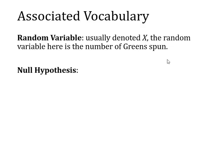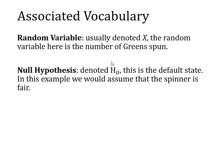Another bit of vocabulary is what we call the null hypothesis. The null hypothesis is always denoted H₀, and it is always the default state — it's what we would assume the case to be without any change. So in this example, our assumption is going to be that the spinner is fair.